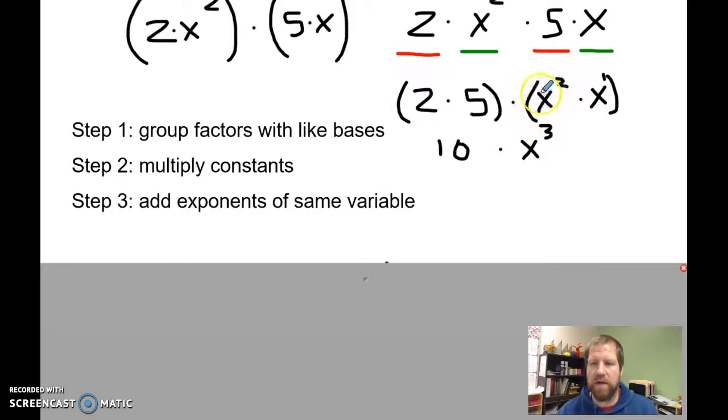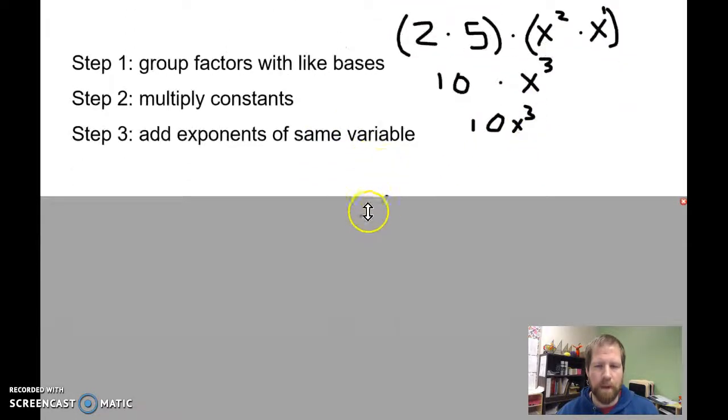And if I broke this down into x times x, we would see even more clearly that this would be x times x times x, or x to the third. And then that's just 10x to the third.